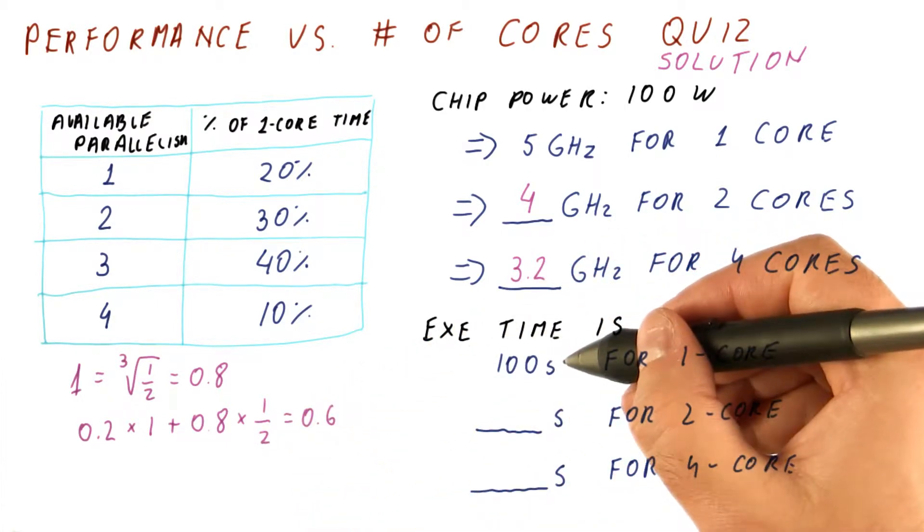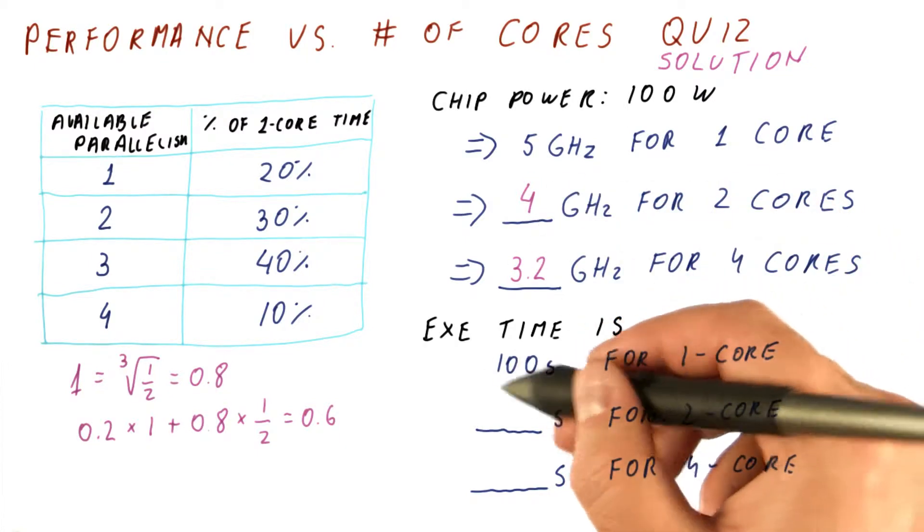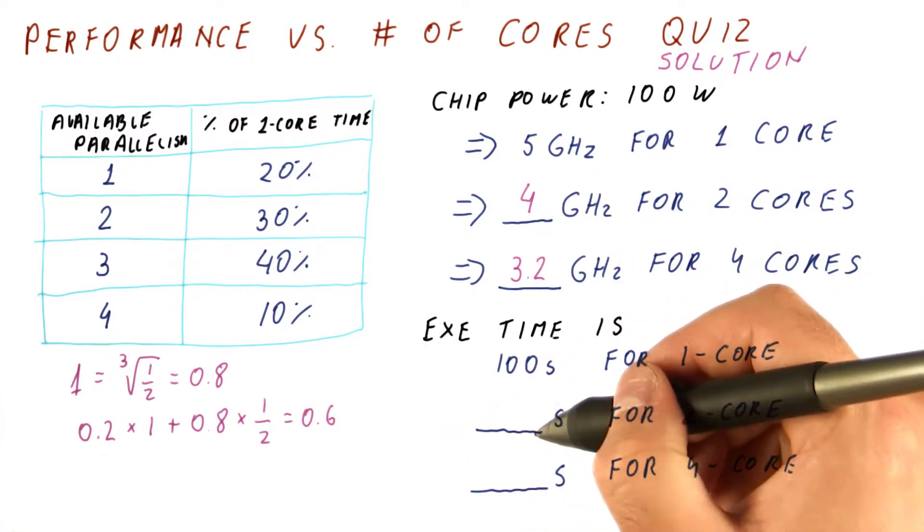So we get 0.6 times the original time if we ignore the frequency. So it would be 60 seconds without the change in frequency.